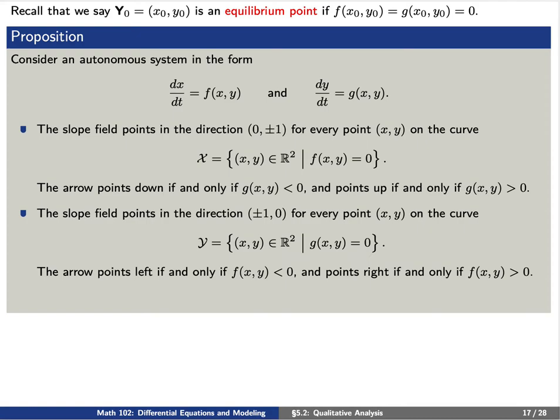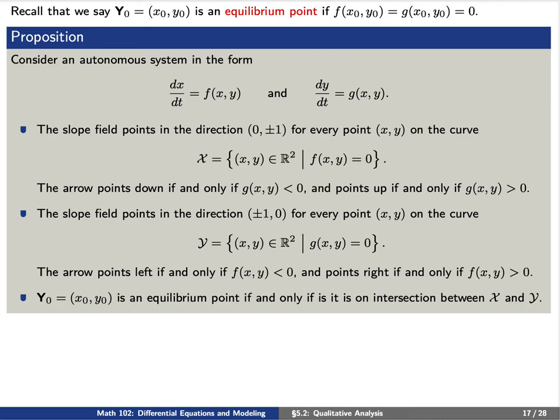The slope field points in the direction (±1, 0) for every point x,y on the curve g(x,y) equals 0, the set we denote by curly-Y. That is, every point in curly-Y gives a slope field in the horizontal direction. The arrow points left if and only if f(x,y) is negative, and it points right if and only if f(x,y) is positive. Finally, the point x0, y0 is an equilibrium point if and only if it is on the intersection between curly-X and curly-Y.